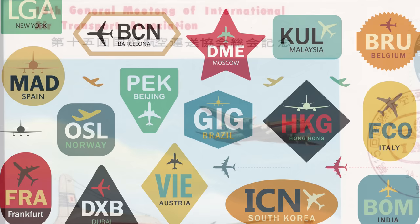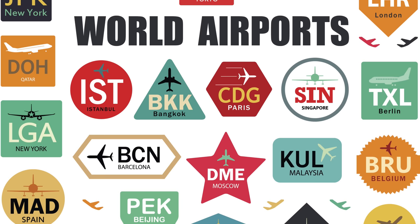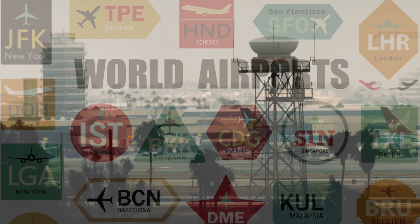While the ICAO uses four-digit airport identifier codes, the IATA uses three-letter codes. Airport Guide explains that both organizations have the same aim: to provide an unambiguous means of referring to specific airports. However, the two do have somewhat different purposes.